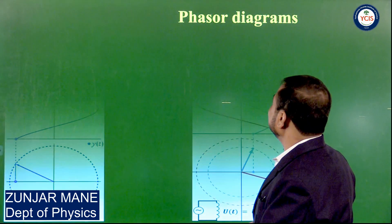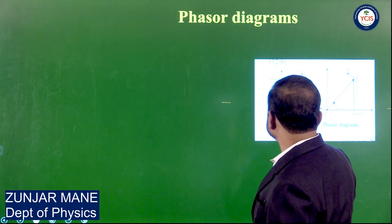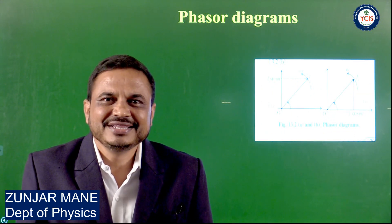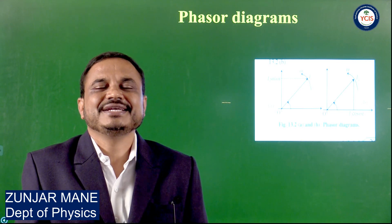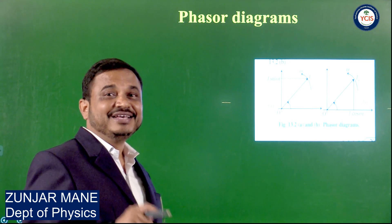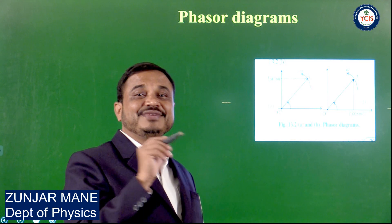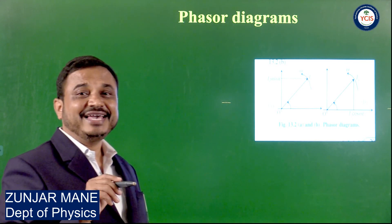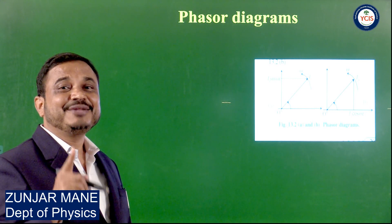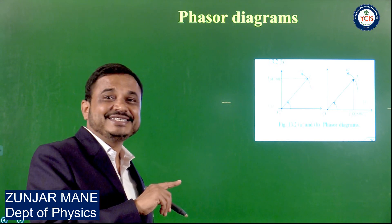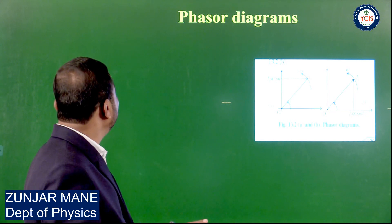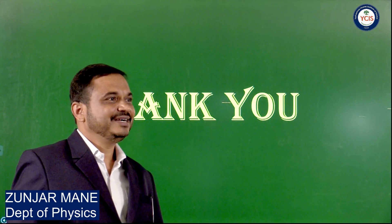So this is about the phasor diagram. Phasor diagrams are rotating vectors which make AC circuits more simplified. They rotate in an anticlockwise sense. Their angle of inclination with the fixed axis gives the phase angle. The length of the phasor gives the peak value of either voltage or current. Their projection on the y-axis gives the sine values and their projection on the x-axis gives the cosine values. So this is about the phasor diagram.